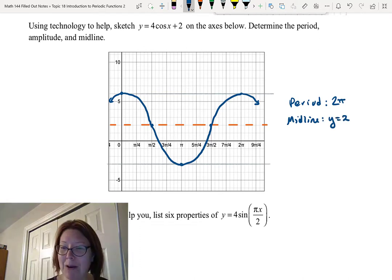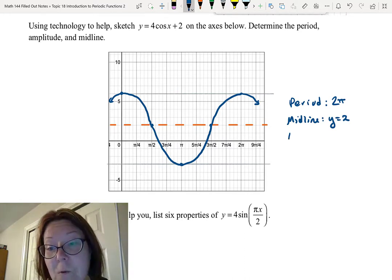The midline was at y equals 2. Again, make sure you write that as an equation, not just a point. And then the amplitude is the distance from the midline to the maximum or the midline to the minimum. And in both cases, that's 4.